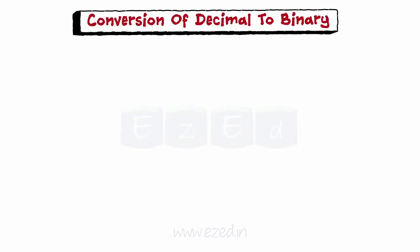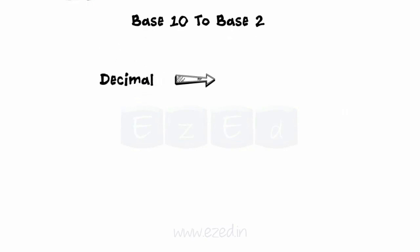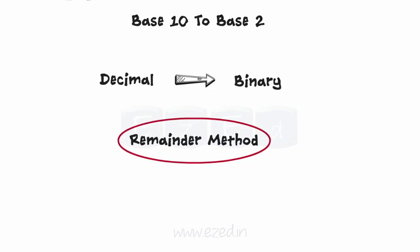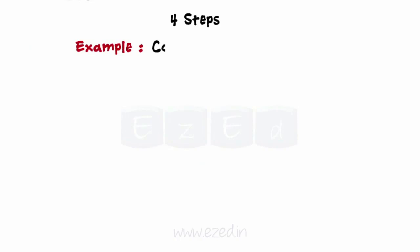Next, we learn to convert from decimal to binary, that is, from base 10 to base 2. To convert a decimal number to its binary equivalent, the remainder method can be used. It involves the following 4 steps. Let us understand this with an example: converting 68 in decimal to binary.